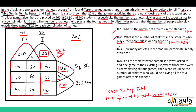The third question is: how many athletes in the stadium participate in only athletics? Those athletes are 20% of total, that means 20% of 1300, which gives us 260.